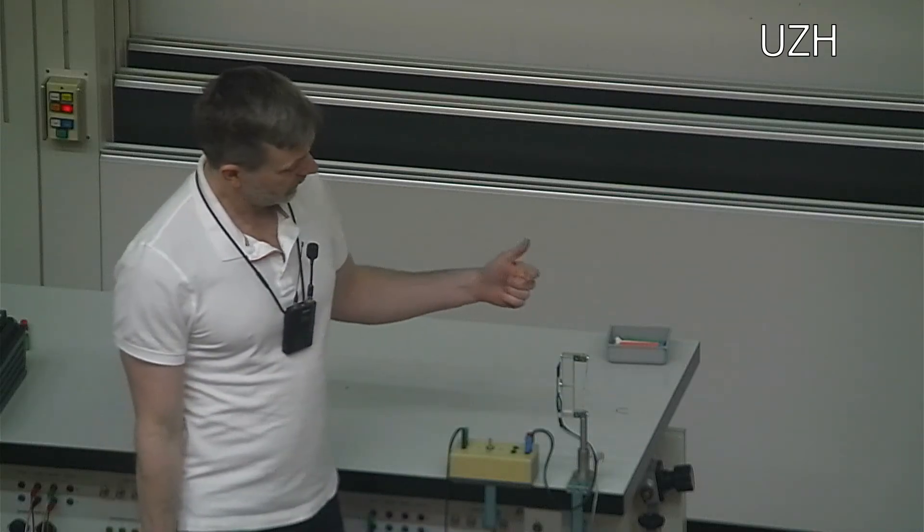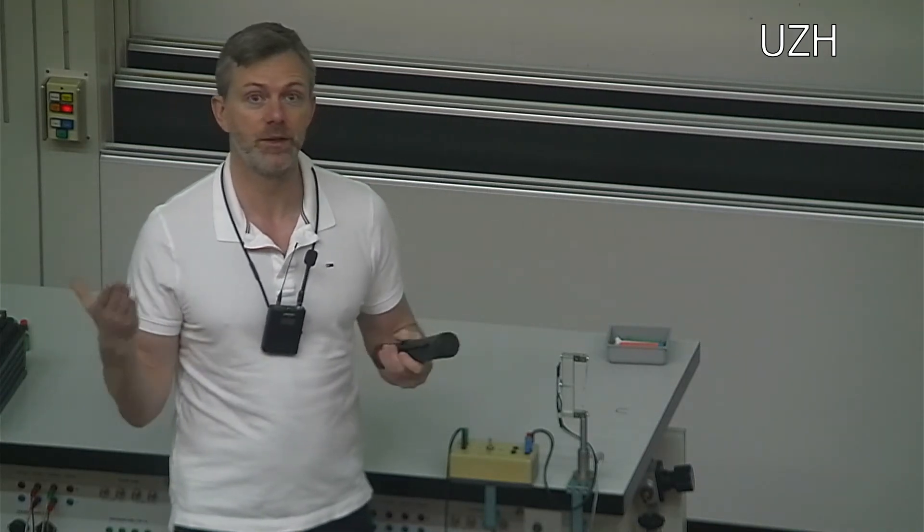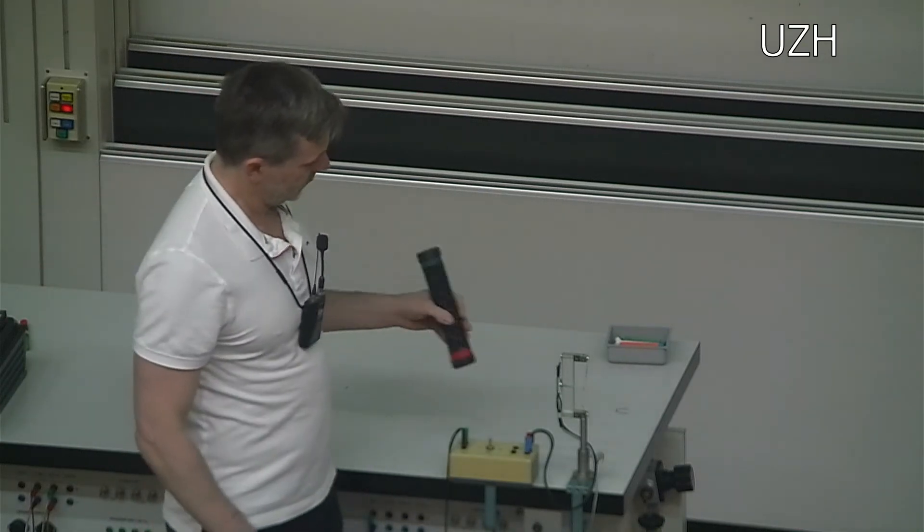So today we're going to try to bend a piece of aluminum here with a magnet, and the problem is that magnets are not attracted to aluminum. Aluminum is not ferromagnetic material. So how are we going to do this?